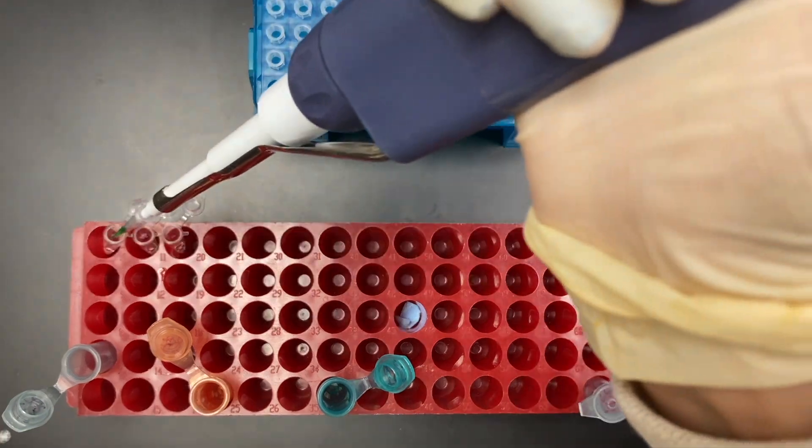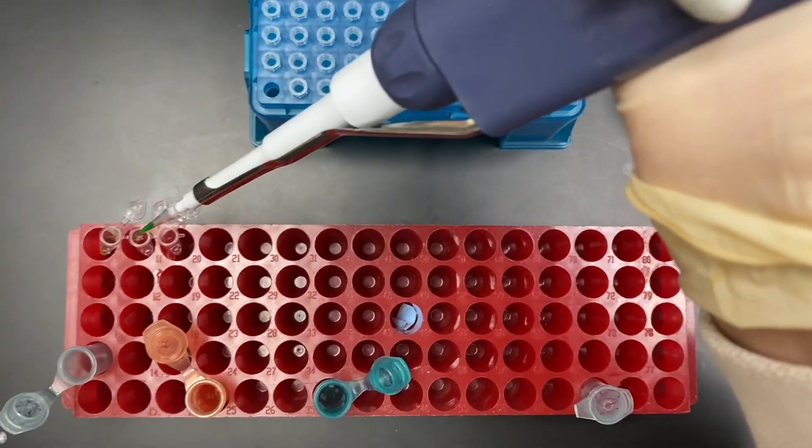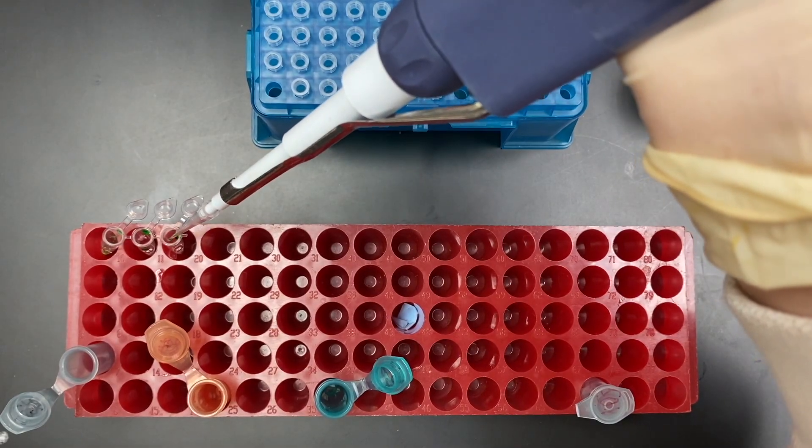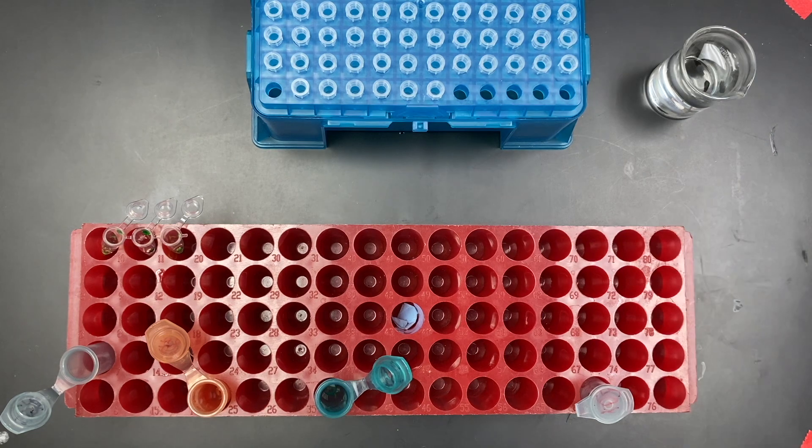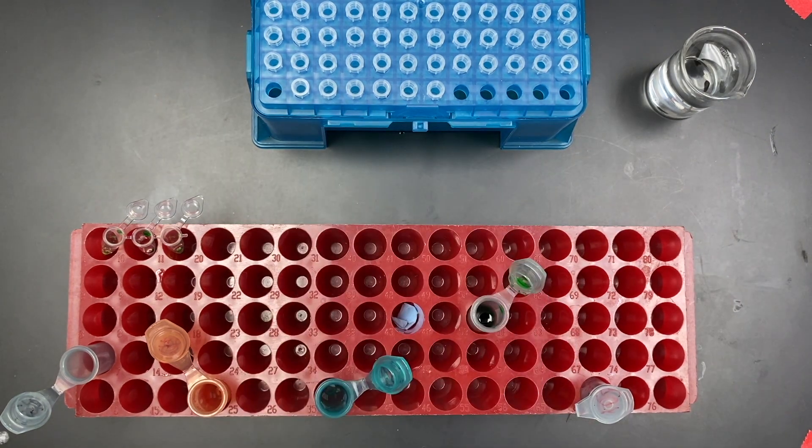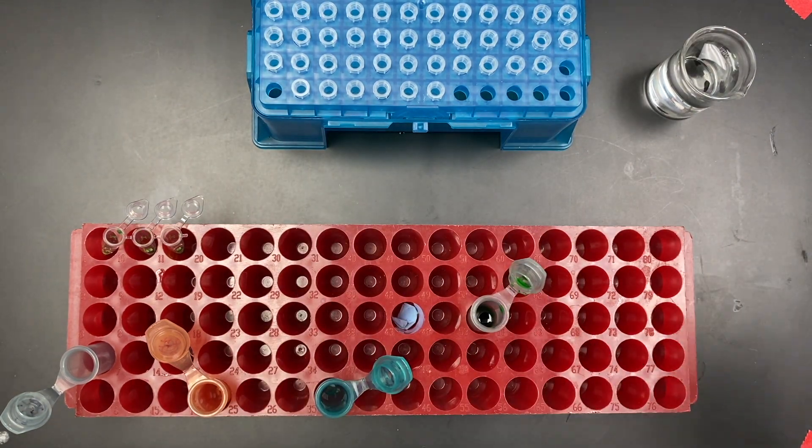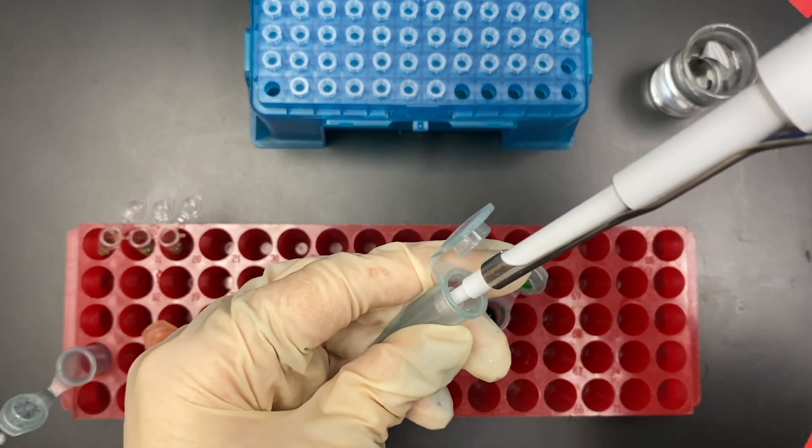I then add 6 microliters of the master mix, which is just a pre-mixed solution of products the DNA will need in order to self-replicate, such as DNA polymerase, magnesium chloride, and some more buffers. And finally, I add 1 microliter of the extracted DNA to each sample.